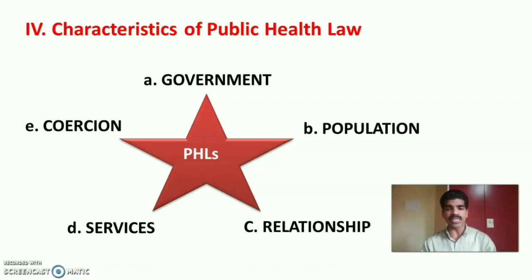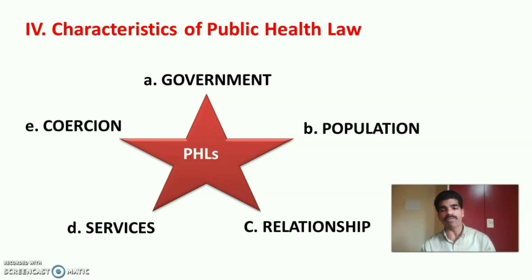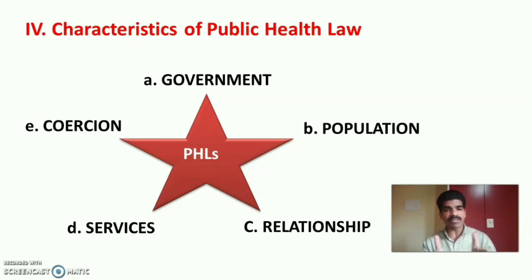Next are the characteristics of public health law. There are five main characteristics: government, population, relationship, service and coercion. Public health laws are the primary responsibility of the government. Second, they are for the promotion of the population or citizens. Third, they indicate the relationship between the government and the population. Fourth, they include public health services. And last, they use power or force to protect the health of the community or individual.